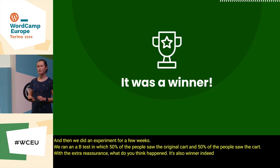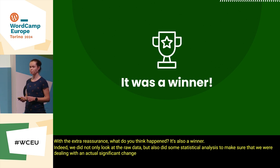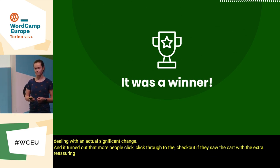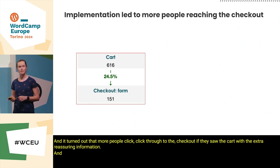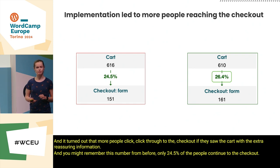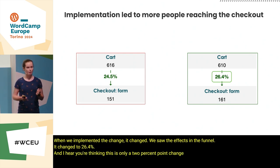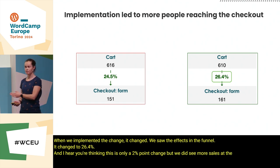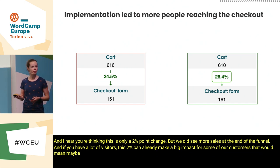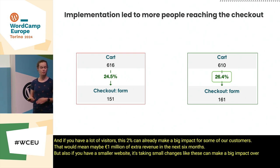It was a winner indeed. We did not only look at the raw data but also did some statistical analysis to make sure we were dealing with an actual significant change. It turned out that more people clicked through to the checkout if they saw the cart with the extra reassuring information. You might remember that only 24.5% of people continued through to the checkout — when we implemented the change, it changed to 26.4%. I hear you thinking this is only a 2 percentage point change, but we did see more sales at the end of the funnel. If you have a lot of visitors, this 2% can already make a big impact — for some of our customers that would mean maybe a million euros of extra revenue in the next six months. But also if you have a smaller website, stacking small changes like these can make a big impact over time if you just keep improving.